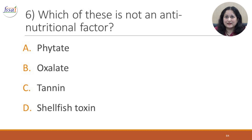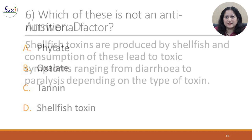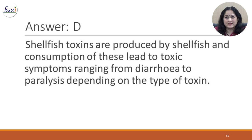Question 6: Which of these is not an anti-nutritional factor? A. Phytate. B. Oxalate. C. Tannin. D. Shellfish toxin. The answer is D. Shellfish toxins are produced by shellfish and consumption of these leads to toxic symptoms ranging from diarrhea to paralysis depending on the type of toxin.